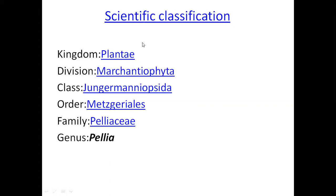In the new classifications, Pellia and Porella are moved from Hepaticopsida to Jungermanniopsida. That is why we take both class Hepaticopsida and Jungermanniopsida. If you write Hepaticopsida, it will also be accepted. The family of Pellia is Pelliaceae.